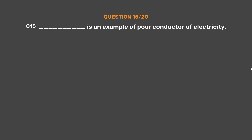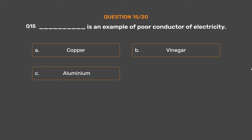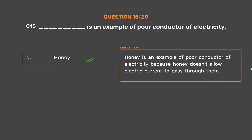Question No. 15: Underscore is an example of a poor conductor of electricity. Option A: Copper. Option B: Vinegar. Option C: Aluminium. Option D: Honey. The correct answer is Option D: Honey. Honey is an example of a poor conductor of electricity because honey doesn't allow electric current to pass through it.